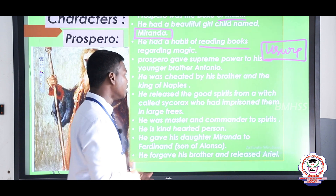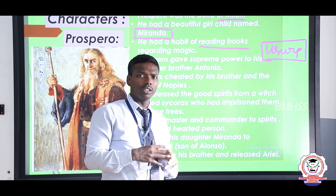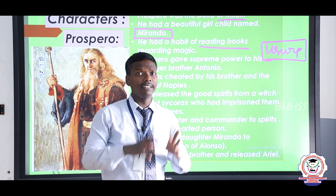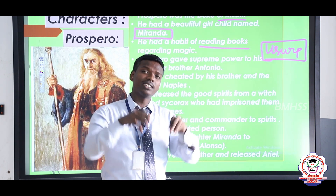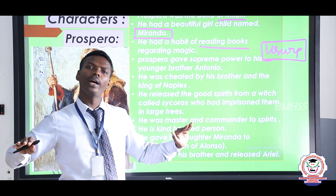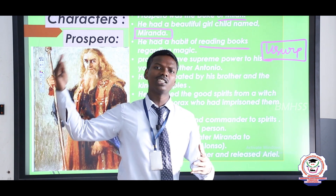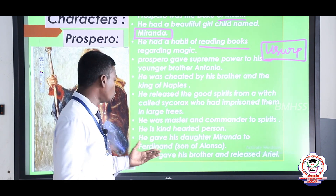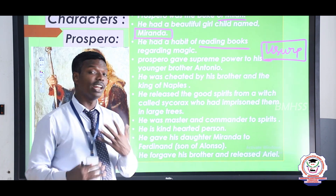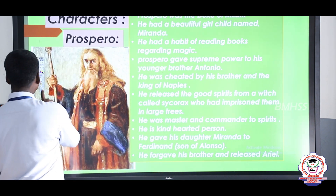Prospero was cheated by his own brother Antonio, along with the King of Naples, Alonso. When he and his daughter were cast away, they reached an island where good spirits had been imprisoned inside trees by the evil witch Sycorax. Prospero released all those good spirits and became master and commander of them. He gave his daughter Miranda to Ferdinand, and at the end of the story he forgave his brother and released Ariel.